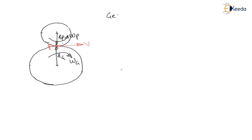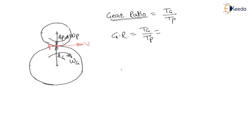Now there is one more term called gear ratio. Gear ratio is the ratio of number of teeth on gear to the number of teeth on pinion — it does not matter who is driver and who is driven. Gear ratio = Tg / Tp = Dg / Dp = Rg / Rp = ωp / ωg, and this is always greater than 1.